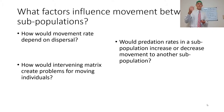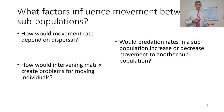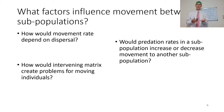Think about what factors influence the movement between subpopulations: how would movement rate depend on dispersal? What kind of problems could be created by the intervening matrix? Would predation rates in a subpopulation increase or decrease movement to another subpopulation? Are organisms more likely or less likely to leave when predation is present? I actually have a paper on this with Ashley Maciejewski, published back in 2014, which looked at different parks in the city of Buffalo.